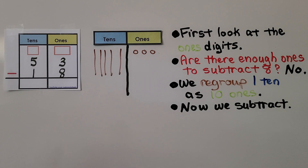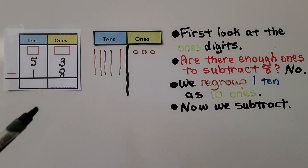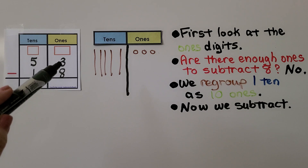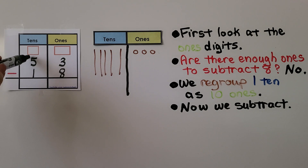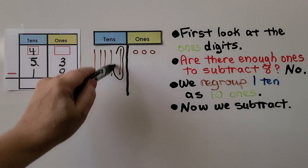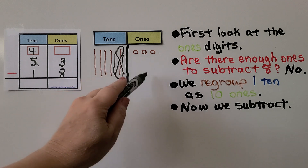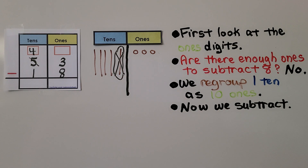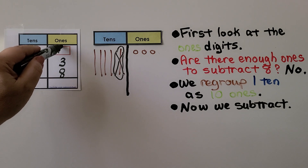Let's try it again. We have 53 minus 18. We start by showing 53 as five tens, three ones. We see we need to take eight ones away from the three ones, but there aren't enough. So we need to regroup. We're going to take away one of the tens — the five tens is going to become four tens. We give the ten to the ones place as ten ones, so instead of three ones we now have thirteen ones.